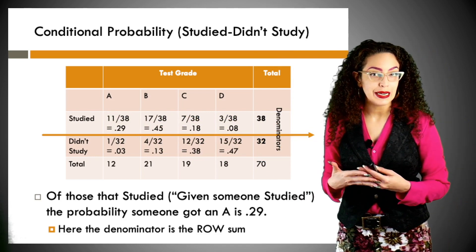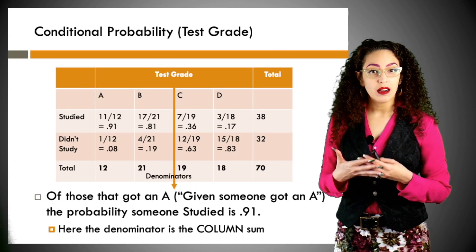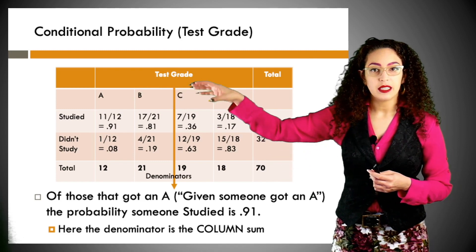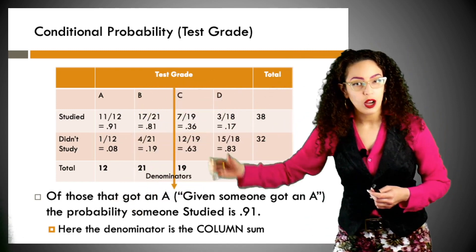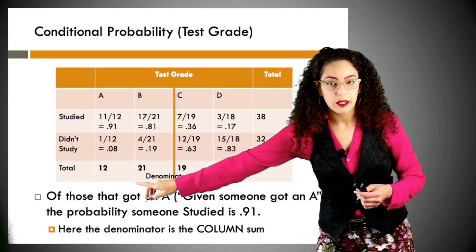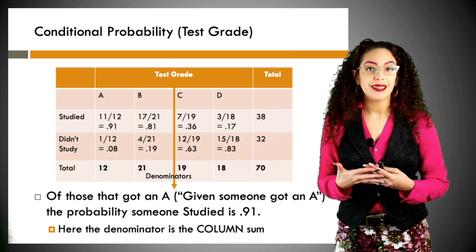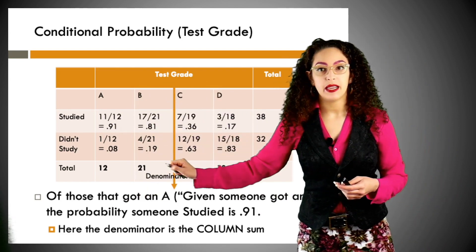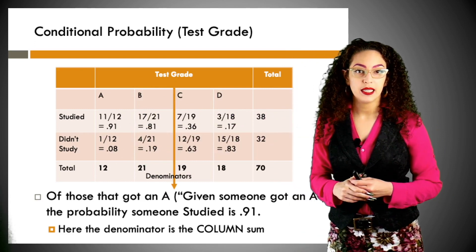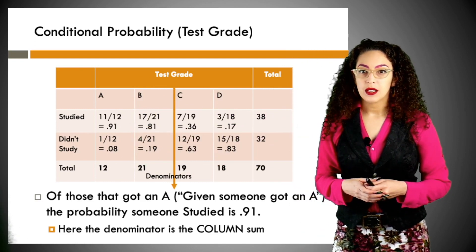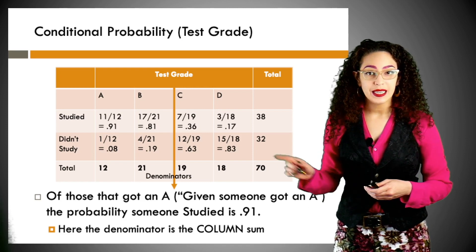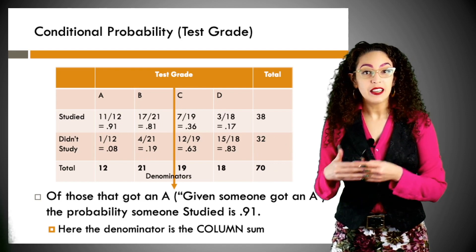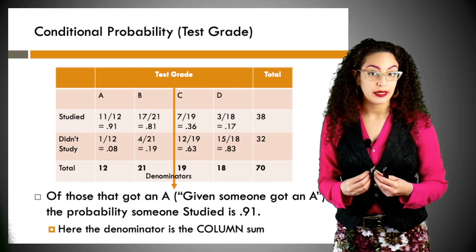We can also condition on a particular grade — denominators become the column sums. Given that somebody got an A, the probability they studied is 91 percent. If you got a D, the probability you did not study is 83 percent. See how dramatically probabilities change given a certain condition — conditioning on a situation changes probabilities dramatically.